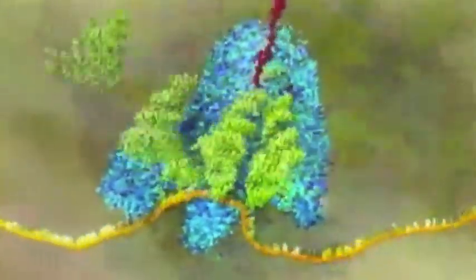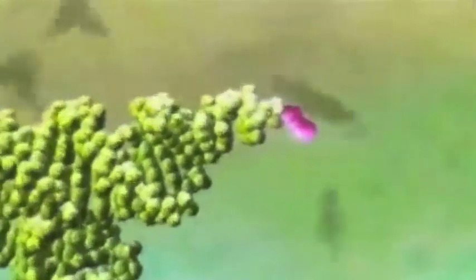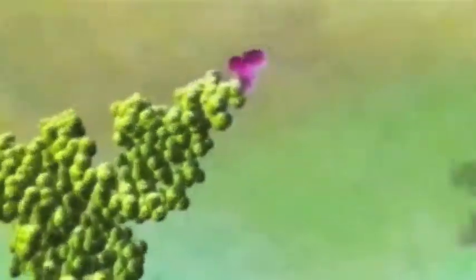As the ribosome moves along the mRNA, it requires specific amino acids. tRNA, or transfer RNA, deliver the required amino acid, as it is attached to them. There is a specific tRNA for each of the 20 different amino acids.